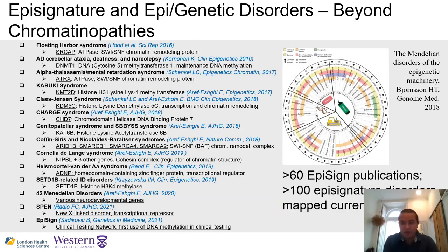Since then, we've expanded significantly. We initially focused on chromatin regulatory genes — chromatinopathies — but have since mapped methylation signatures in mitochondrial conditions, neuromuscular conditions, and epilepsy. Currently there are close to 150 different DNA methylation profiles mapped, about 120 of which are in the clinical EpiSign classifier. The methylation variant pathogenesis score (MVP score) used in our multi-class classifier shows high sensitivity and specificity, with each patient's dot clearly separating their condition from others in cohort comparisons.